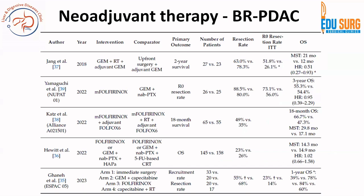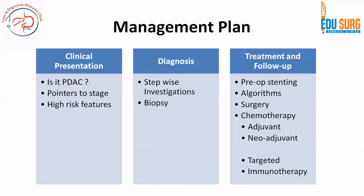Many studies have been conducted in the neoadjuvant therapy setting for borderline resectable pancreatic cancer. PREOPANC-05 is the latest from 2023, and it has also suggested a role for neoadjuvant therapy in borderline resectable pancreatic cancer. In summary, neoadjuvant therapy is recommended for borderline resectable disease. In the next part, we will go into the REDISCOVER guidelines and the management of locally advanced and metastatic pancreatic cancer.